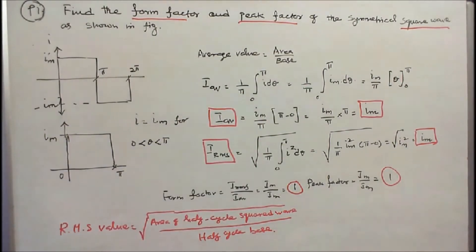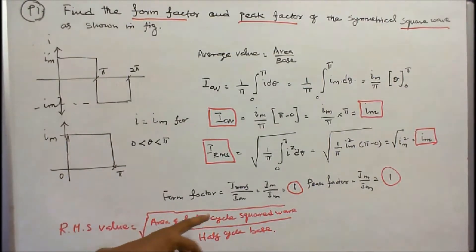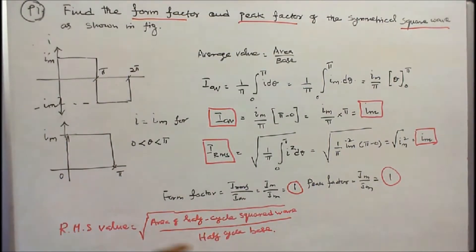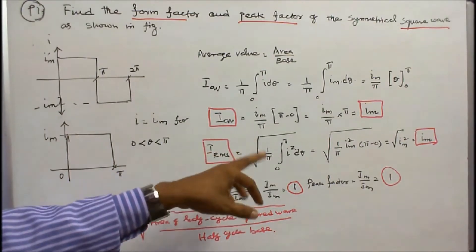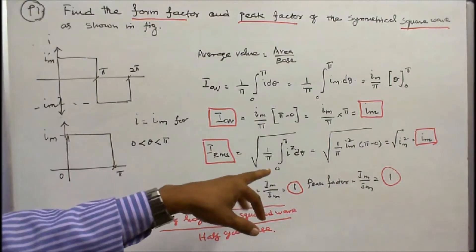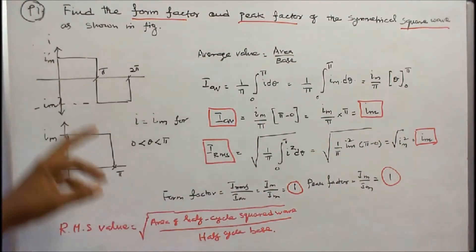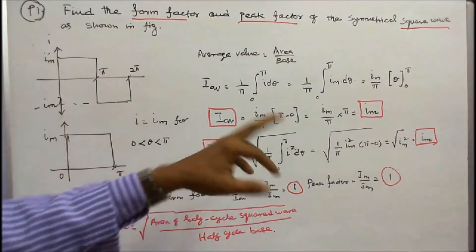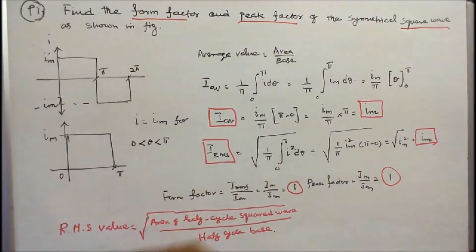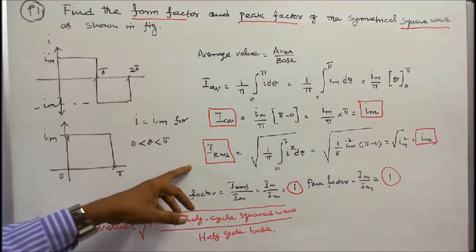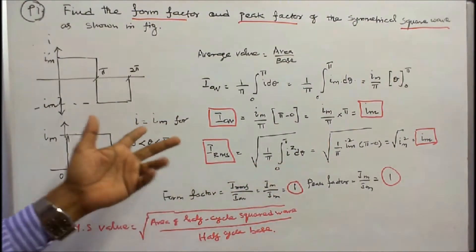The RMS value equals the square root of the area of the half-cycle squared wave divided by the half-cycle base, which is pi. Therefore, I_rms = sqrt[(1/pi) × integral from 0 to pi of I² dθ]. Since I = I_m, integrating and substituting the limits gives I_rms = I_m.